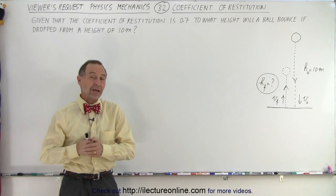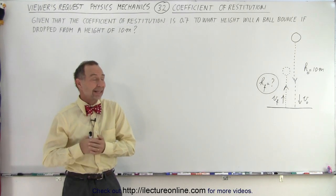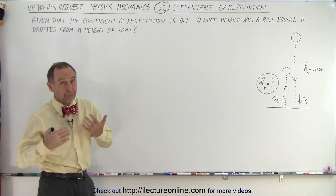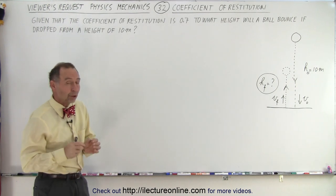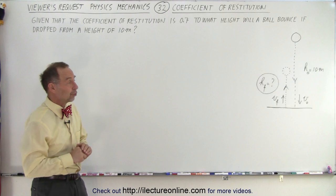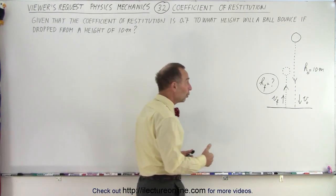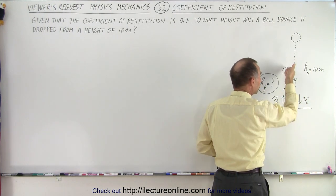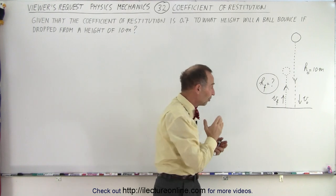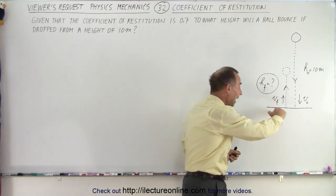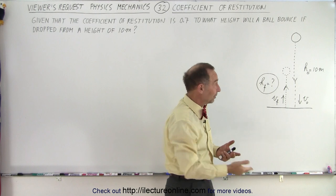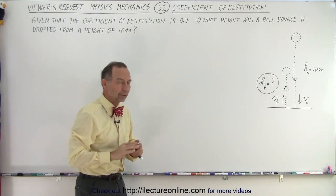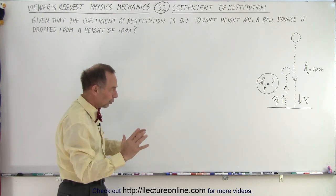Welcome to our lecture online. Here we have another view request, and it deals with the coefficient of restitution. We don't see this concept very often, and that's probably why the question. The problem reads as follows: we're dropping an object from a height of 10 meters. It collides with the floor and bounces back up. If the coefficient of restitution is 0.7, to what height will the ball bounce back up, given that it was dropped from a height of 10 meters? We're ignoring air drag and wind resistance.